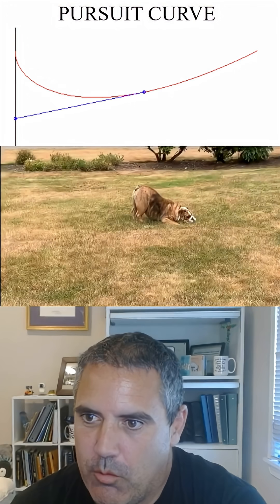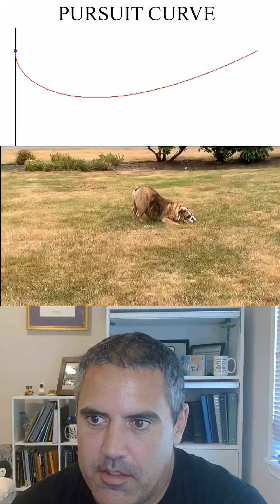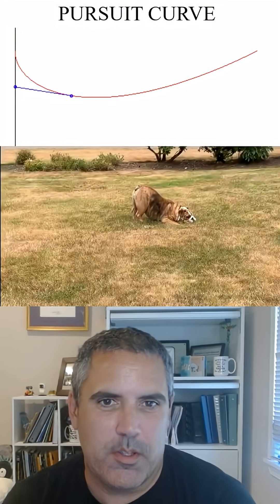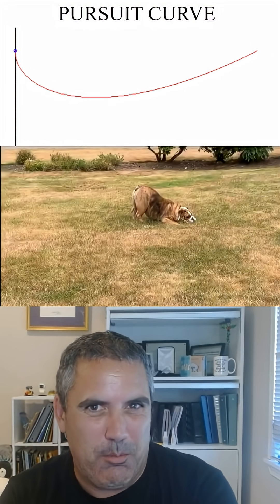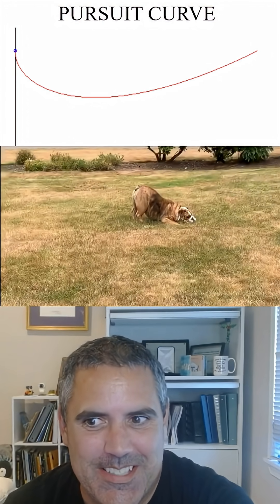So imagine the red curve represents where the dog is running, and imagine the thing that's going up the axes there is a rabbit. And at every moment the dog is running straight at the rabbit, and the rabbit's running straight up. If the rabbit runs really fast he can't quite catch up. And there's a whole analysis of this.